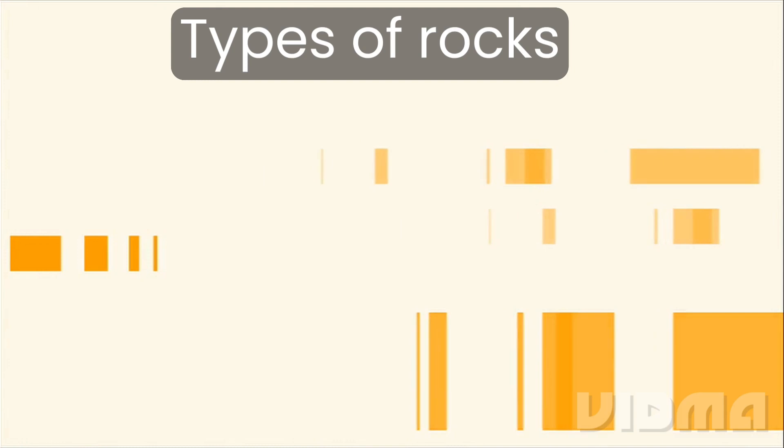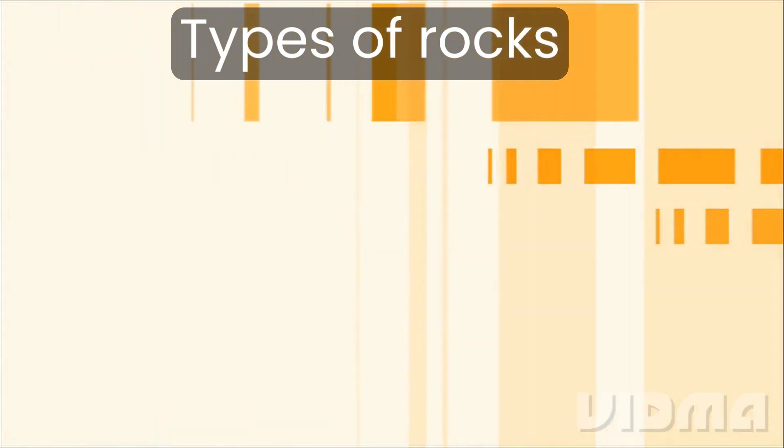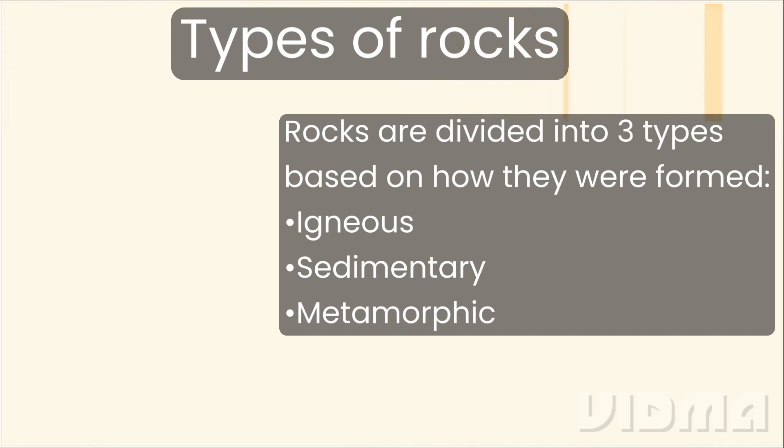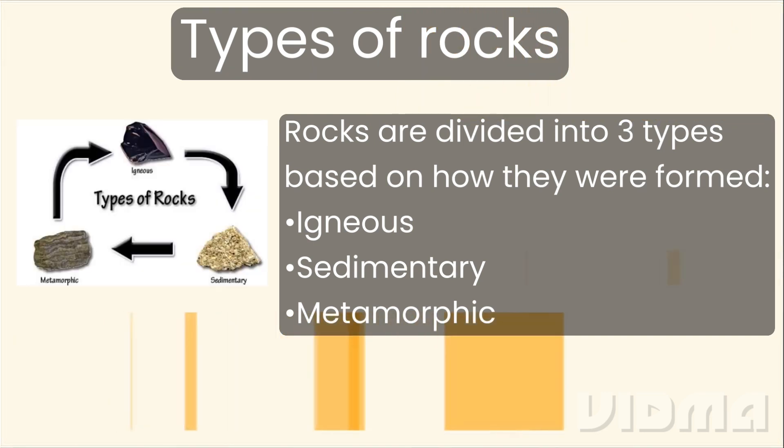Now based on this disintegration of rocks, rocks are divided into three types. The first one is igneous rock, sedimentary rock, and metamorphic rocks.